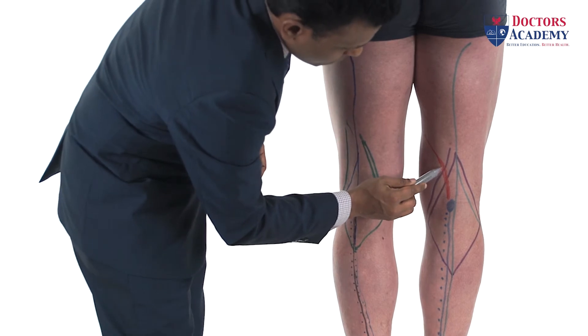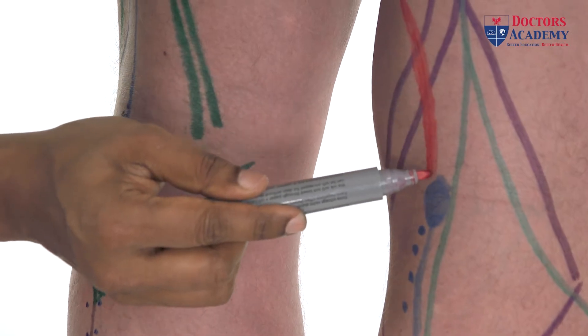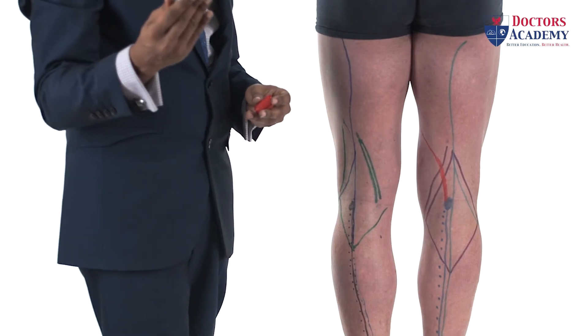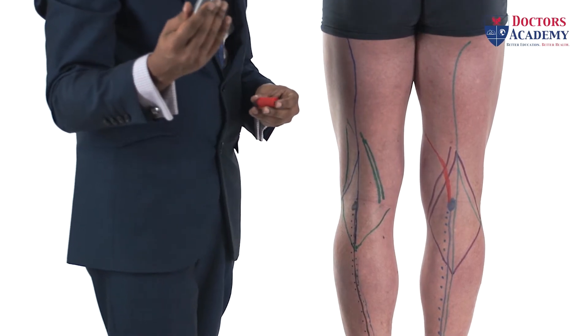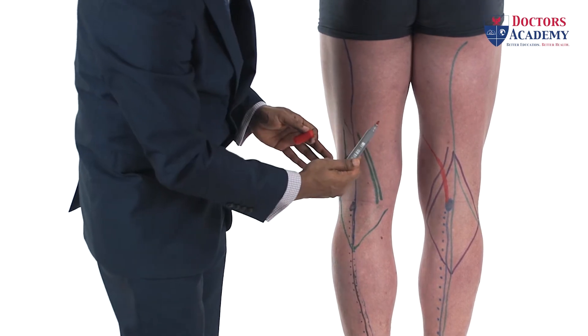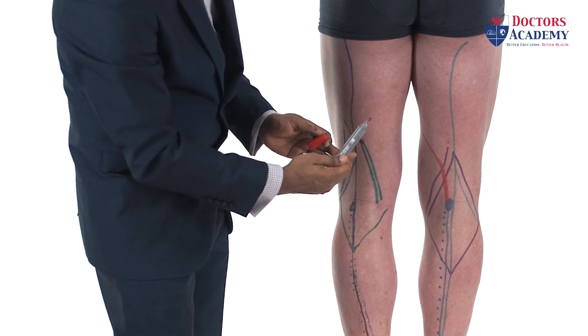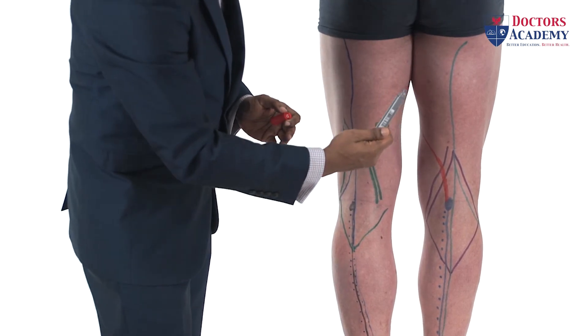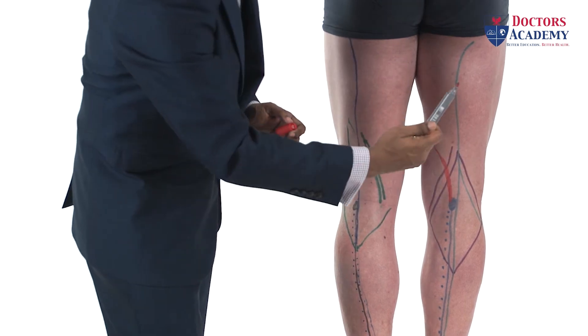When it comes to the popliteal fossa, the popliteal artery can either bifurcate or trifurcate. Regardless, it is usually divided into an anterior tibial artery which runs anterior to the tibia, a posterior tibial artery which runs posterior to the tibia, and a peroneal artery which runs on the side of the fibula on the lateral side.